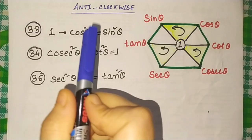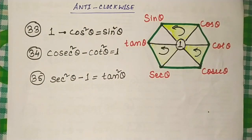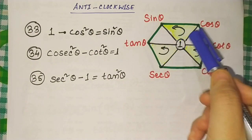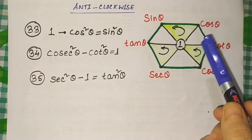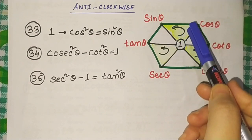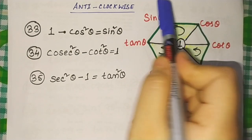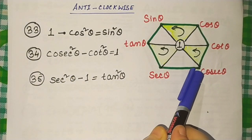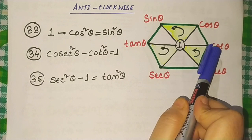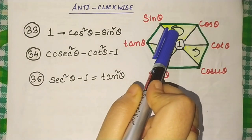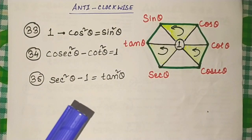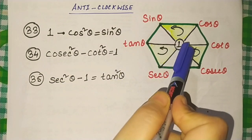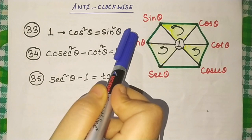Now we will go in the anticlockwise direction, and anticlockwise means we write the minus forms. So: 1 − cos²θ = sin²θ. Then cosec²θ − cot²θ = 1. And the last one: sec²θ − 1 = tan²θ. In this way we get six rearranged forms of the three Pythagorean identities.